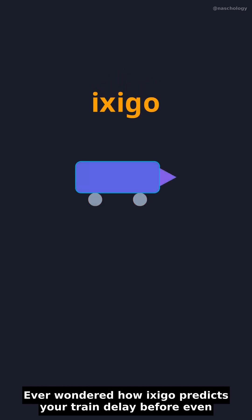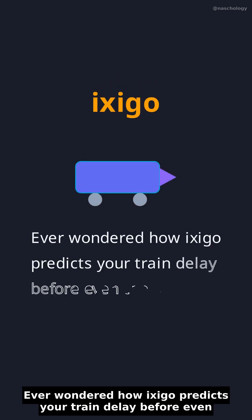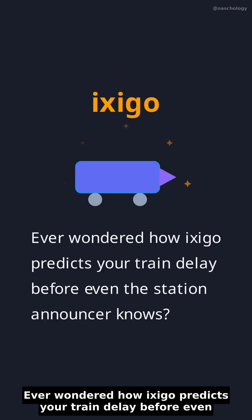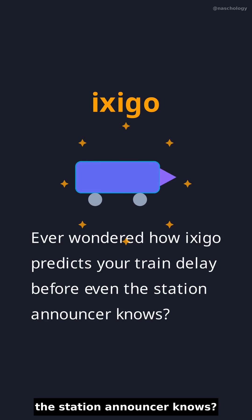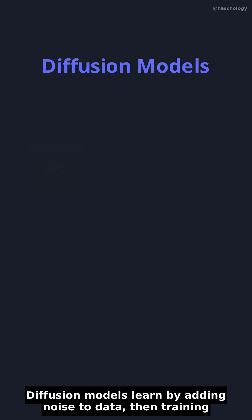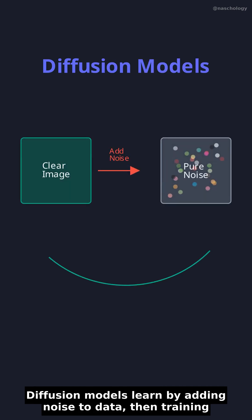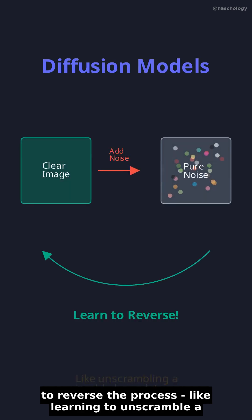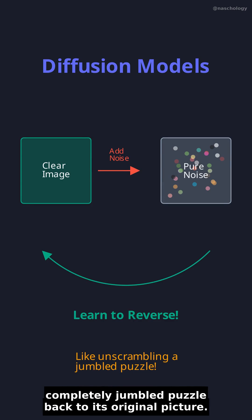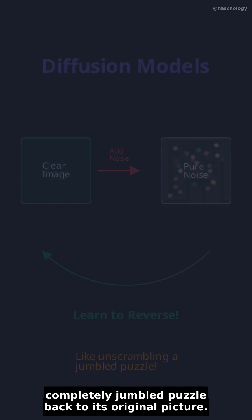Ever wondered how Ixigo predicts your train delay before even the station announcer knows? Diffusion models learn by adding noise to data, then training to reverse the process — like learning to unscramble a completely jumbled puzzle back to its original picture.